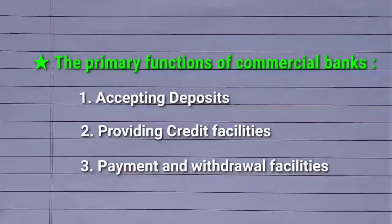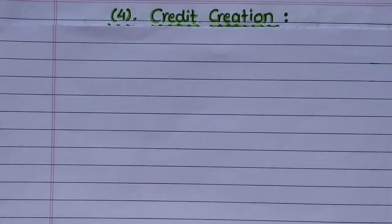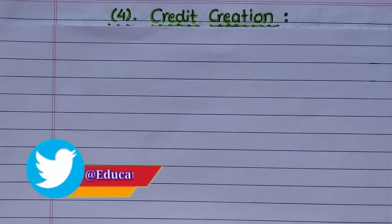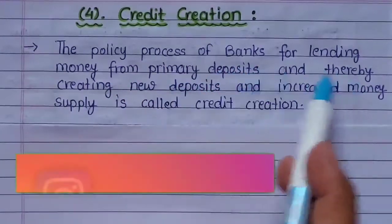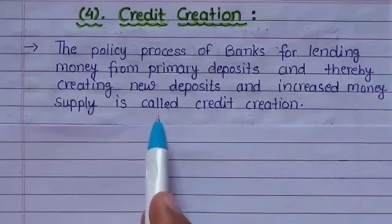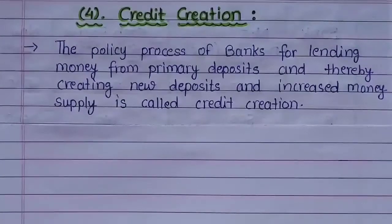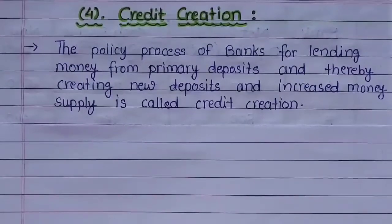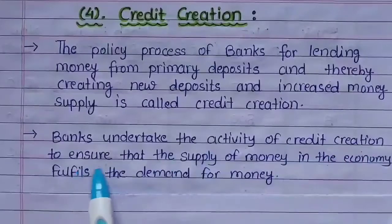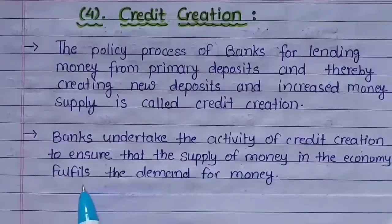In today's video, we will understand the most important primary function of commercial banks, and that is credit creation. Friends, credit creation का simple अर्थ होता है शाक सर्जन या उधार amount देना. The process of banks lending money from primary deposits and thereby creating new deposits and increased money supply is called credit creation. यानि कि bank अपनी primary deposits में से लोगों को उधार पैसे loan के रूप में देकर banking व्यवस्था में नई deposits create करके money supply बढ़ाने की जो process करती है उस process को हम credit creation कहते हैं.